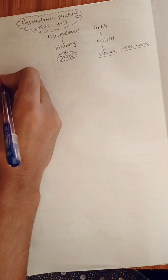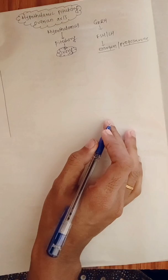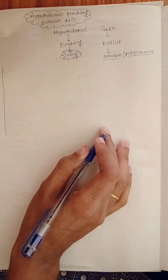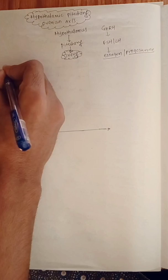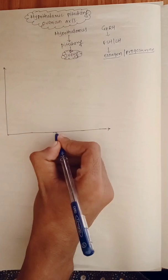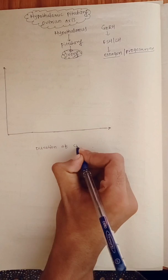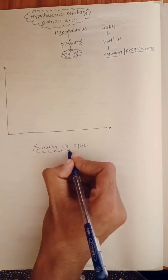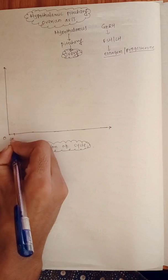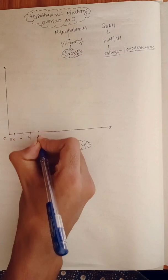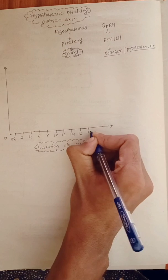We are going to study about a small concept of how hormonal variation occurs during the menstrual cycle. We are going to draw a chart where on the x-axis we will put the duration of the menstrual cycle, that is days of the menstrual cycle, and on the y-axis we will put concentration of hormones. The x-axis spans from 0 to 28 days, up to the next cycle of 28 days.